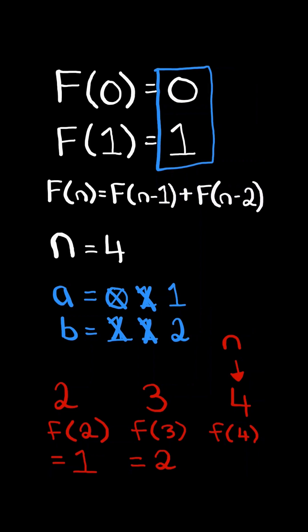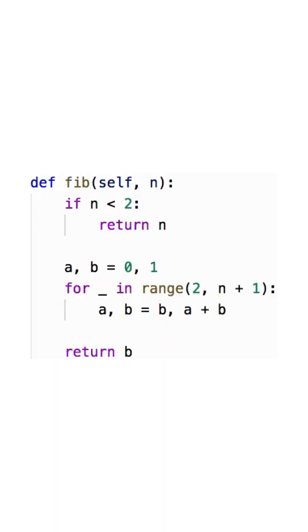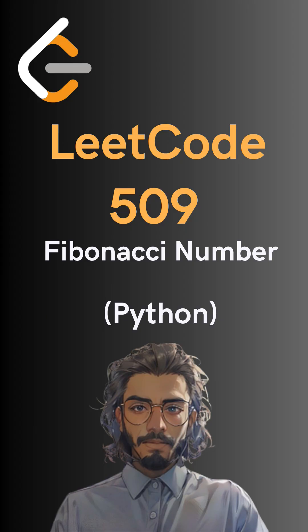We continue and calculate the next number in the sequence. It equals the sum of the previous two numbers. We advance a by setting it equal to b, and we advance b by setting it equal to the current number in the sequence. At the very end, b will contain the nth number in the Fibonacci sequence, and here's the code to do so.